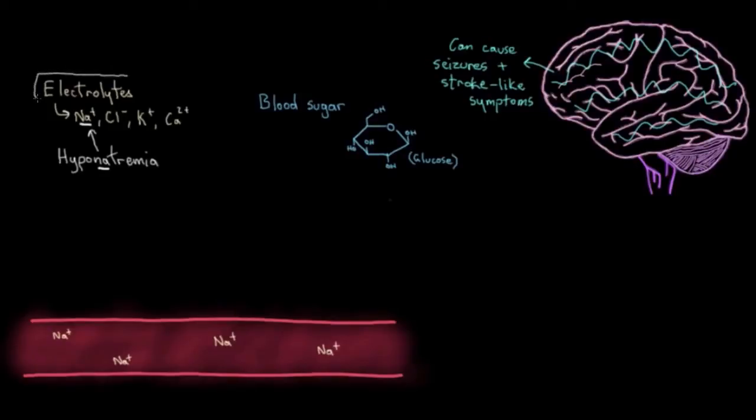The electrolyte check can also give you an idea of whether there's some underlying kidney disease in the patient, because the kidneys are responsible for maintaining our electrolyte concentrations in our blood at proper levels. If our electrolytes are out of whack, we check to see if the kidneys are out of whack. And kidneys that are not functioning very well can predispose you to stroke.